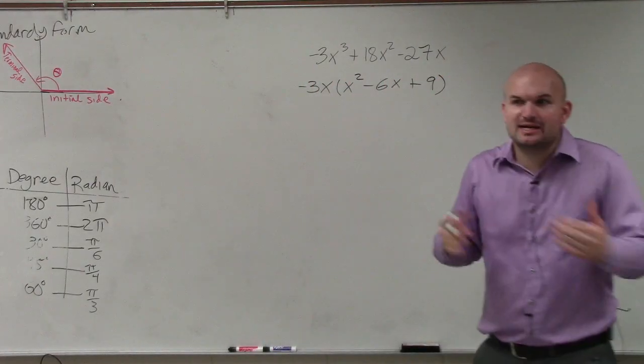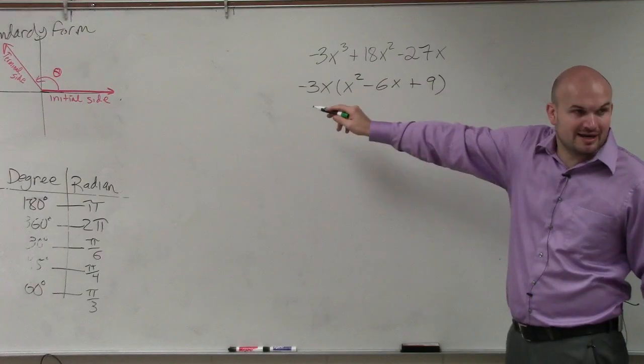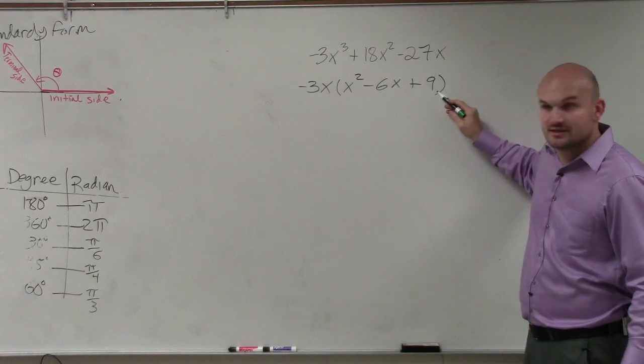Because basically, factoring it out is like dividing. What's negative 27 divided by negative 3? 9. Positive 9, right?